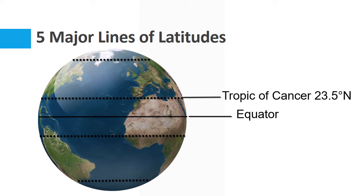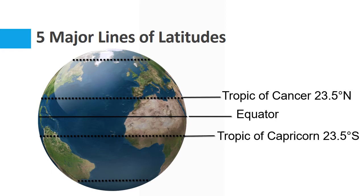This line is called the Tropic of Cancer. It is located at 23.5 degrees north. And this line is called the Tropic of Capricorn. It is located at 23.5 degrees south.